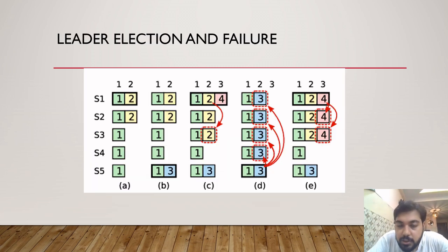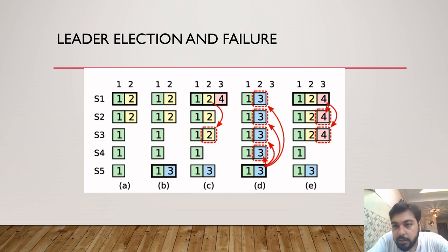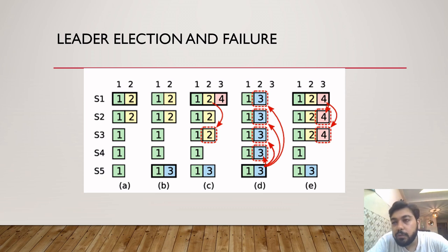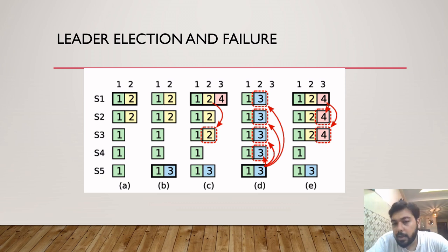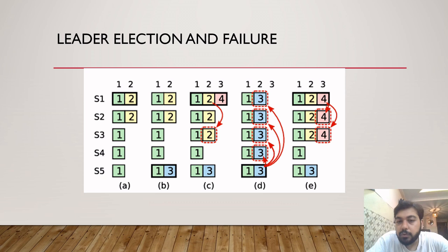How does leader election take place, and when there is a difference between the follower and leader log, how do we ensure the follower log follows the leader log? There could be loss updates and so on. The question is: how is the consistency of data maintained? We will see how leader election takes place and how the consistency of data is maintained.